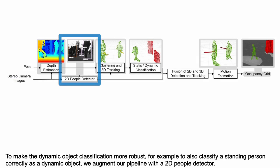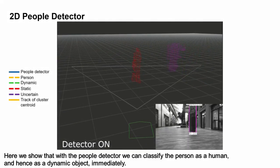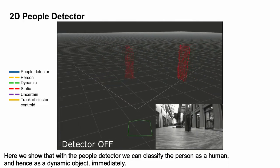for example to also classify a standing person correctly as a dynamic object, we augment our pipeline with a 2D people detector. Here we show that with the people detector, we can classify the person as a human and hence as a dynamic object immediately.